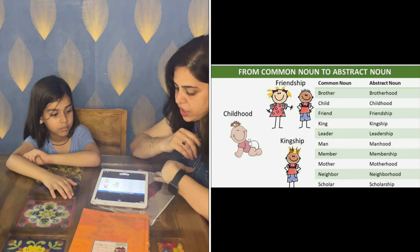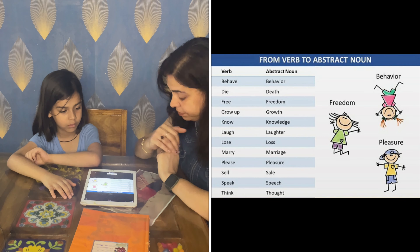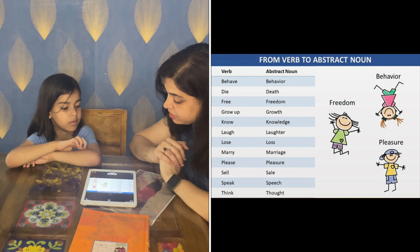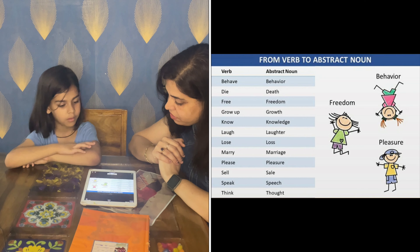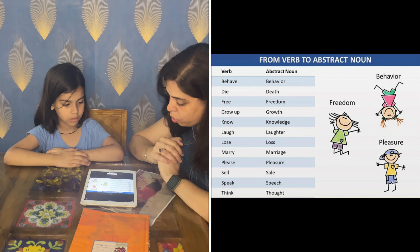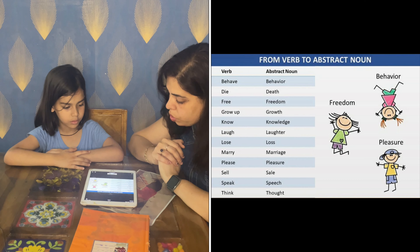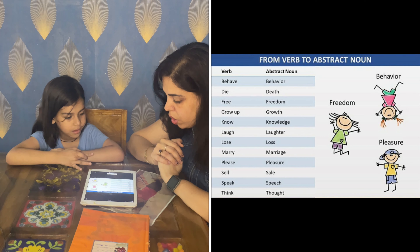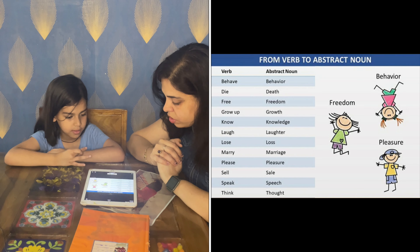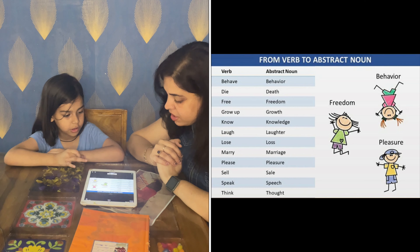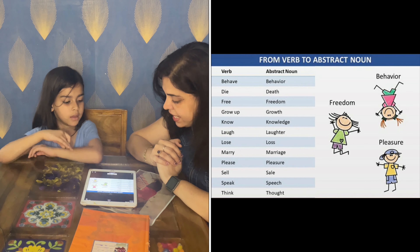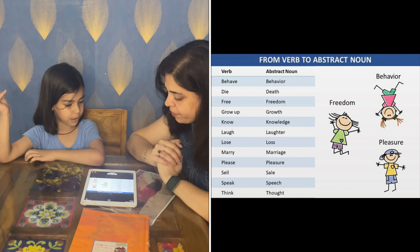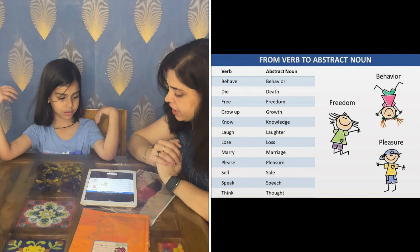Ab kuch abstract nouns hote hain jo verb se convert hote hain. Verb kya hotay hain — jaise humara behavior. Verb to abstract noun conversions: behave → behavior, die → death, free → freedom, grow → growth, know → knowledge, laugh → laughter, lose → loss, marry → marriage, please → pleasure, sell → sale, speak → speech, think → thought.